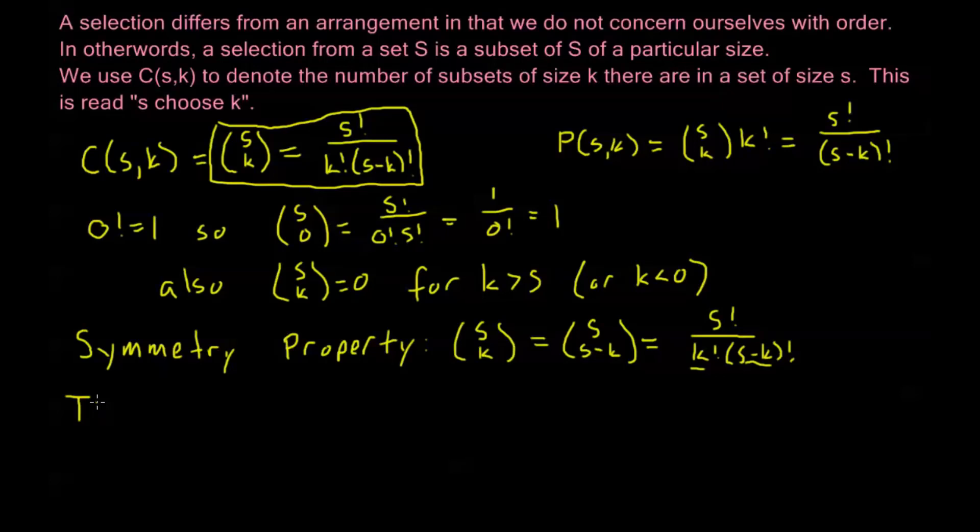Now we also have what's called Pascal's identity. I'll write it here as a theorem. And that is that S choose K is going to be equal to S minus 1 choose K plus S minus 1 choose K minus 1.